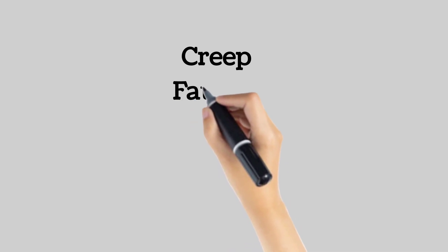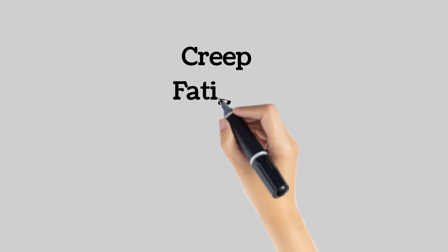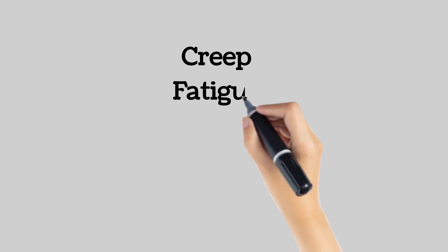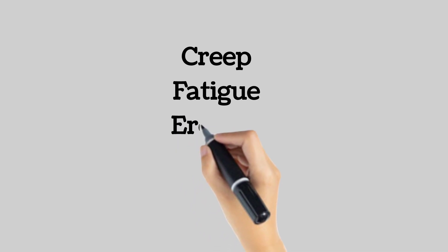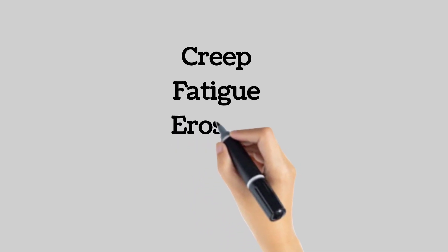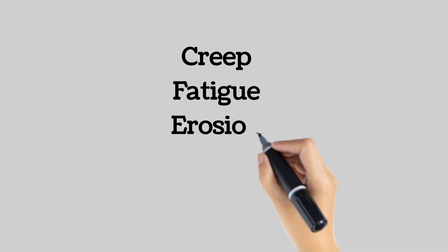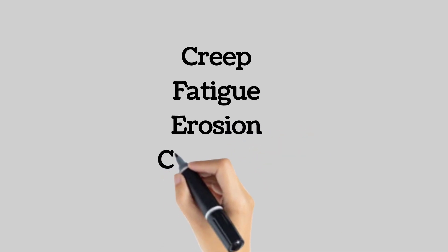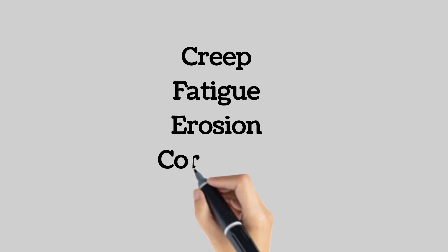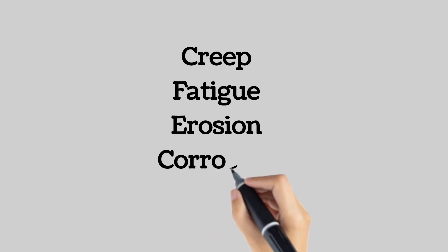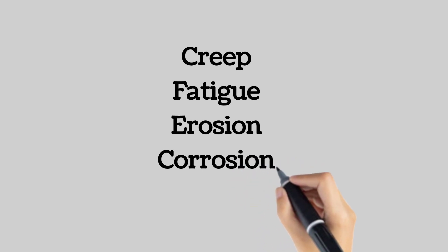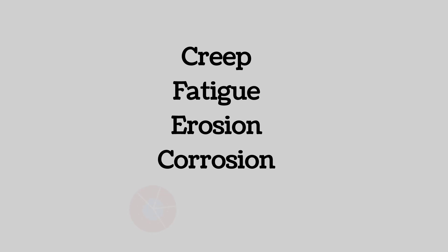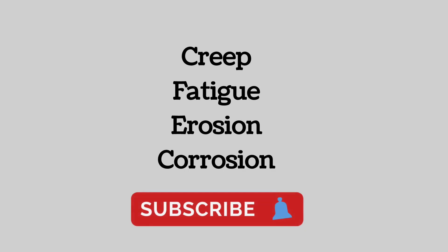Fatigue damage in materials is caused by cyclic loading with sufficiently high stress amplitude, resulting in initiation and propagation of cracks. Erosion damage is caused by the impact of particles on a surface resulting in loss of material, which means a reduction of material available to carry the load. Corrosion damage develops with certain combinations of material type and environment, and is caused by an electrolytic reaction which leads to erosion or crack formation.